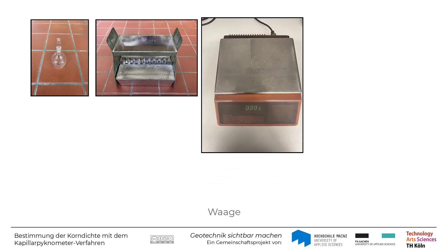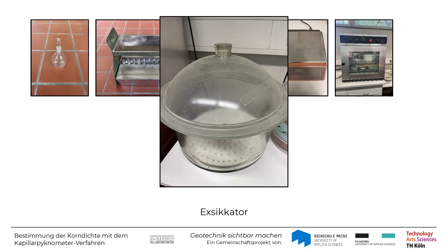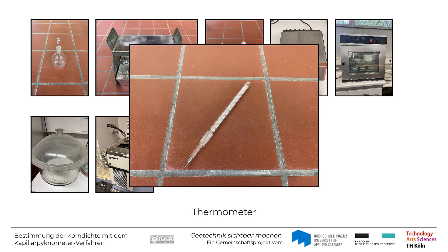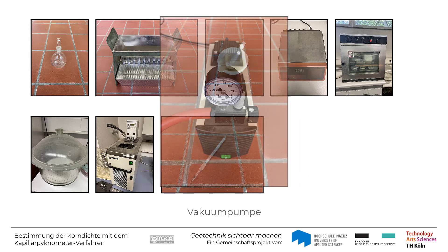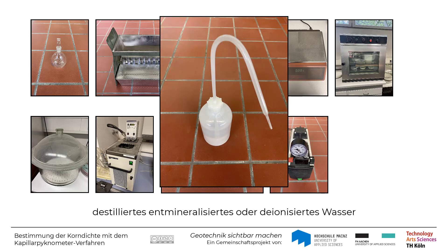Weiterhin benötigt man eine Waage, einen Trocknungsofen, gegebenenfalls einen Exzikator, in den die Probe nach der Trocknung eingestellt wird, um eine Feuchtigkeitsaufnahme zu vermeiden, ein Wasserbad oder einen temperaturgesteuerten Versuchsraum, ein Thermometer, eine Vakuumpumpe oder ein Wasserentlüfter, der ein partielles Vakuum erzeugen kann, sowie destilliertes, entmineralisiertes oder deionisiertes Wasser, das als Kontrollflüssigkeit genutzt wird.